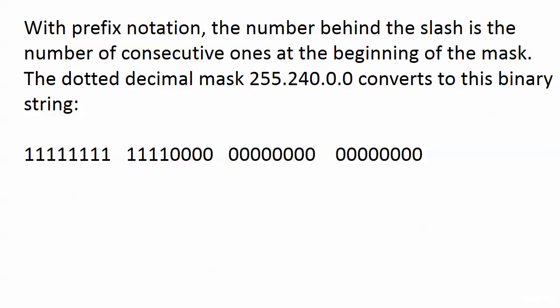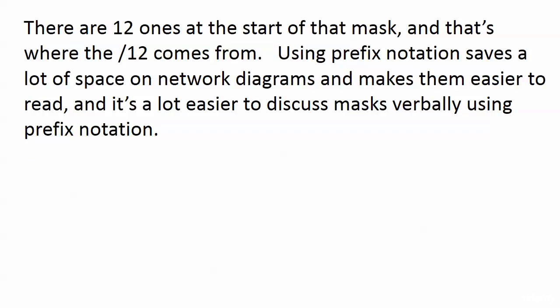With prefix notation, the number behind the slash is the number of consecutive ones at the beginning of the mask. That's all it is. The dotted decimal 255.240.0.0 converts to the binary string in front of you now - it's 12 ones at the beginning and then everything else is a zero. That's where the slash 12 comes in. Beyond making it easier to read network diagrams, it's easier to discuss the masks verbally. There's nothing like listening to somebody give a presentation saying 255.255.255.252 about 500 times in a meeting instead of saying slash 30.